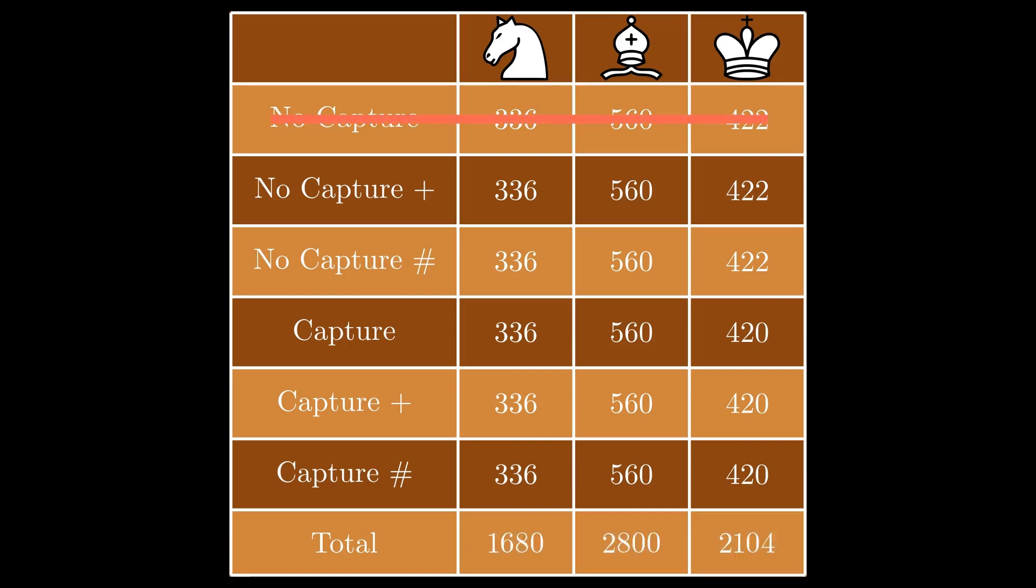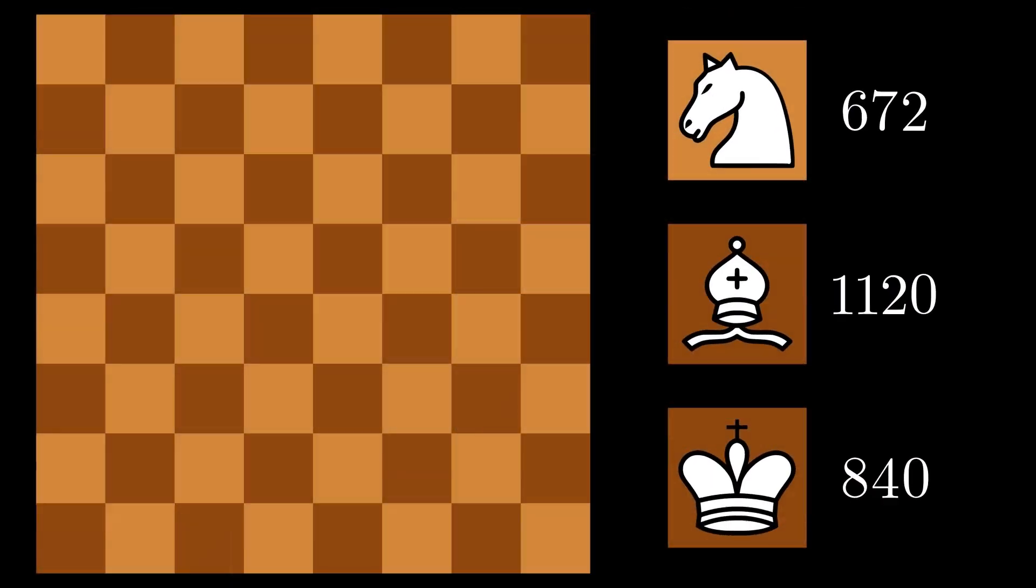For all three pieces, they must capture an opposition piece, but of course not deliver checkmate. Their requirements reduce the count significantly, leaving the Knight with 672, the Bishop with 1,120, and the King with 840 moves.